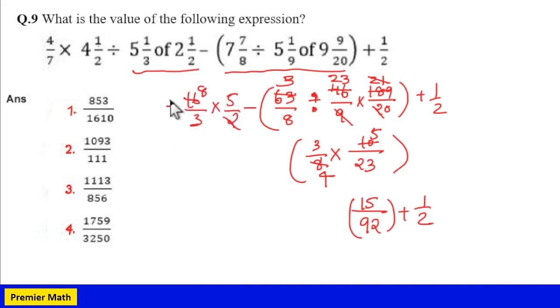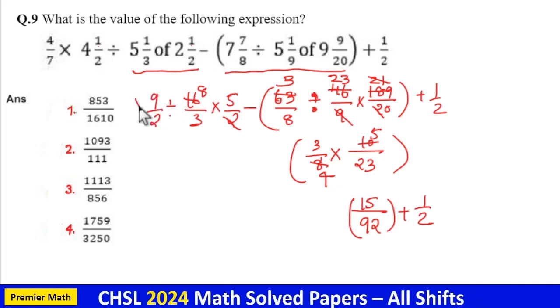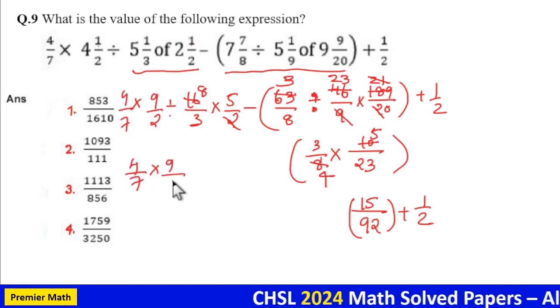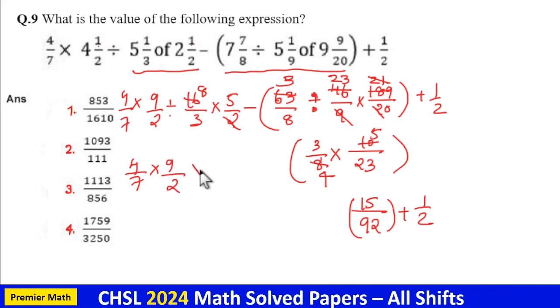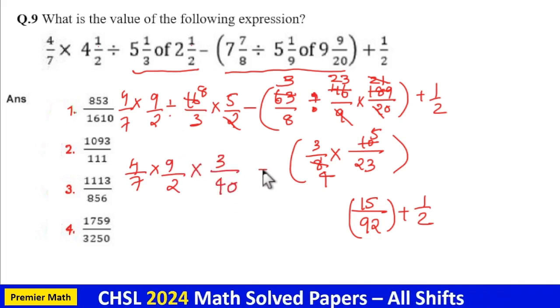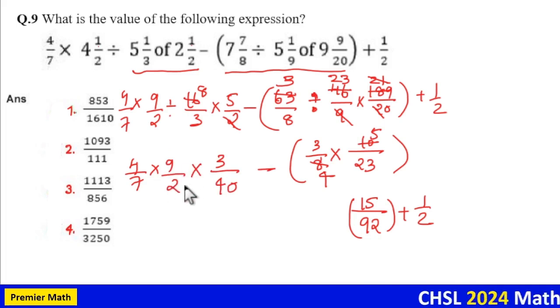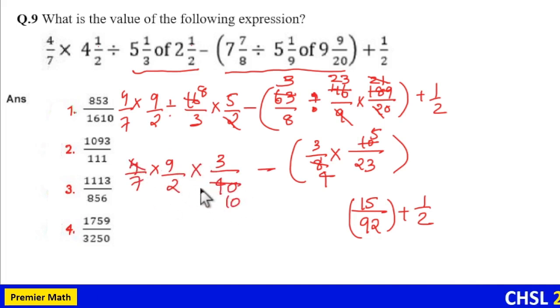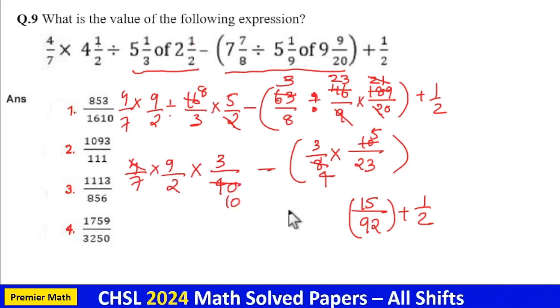Now solve this. That is here 4 into 2, 8 plus 1, 9 by 2 into 4 by 7. Now this is 4 by 7 into 9 by 2 divided by, I will write it as into 3 by 40. Now this will become 4 goes 10 times in 40. So remaining 27 by denominator 140.